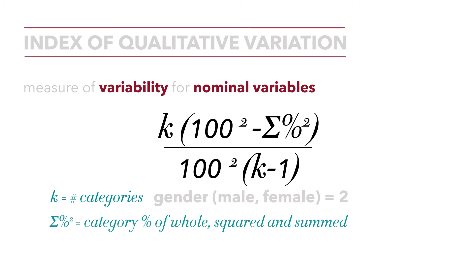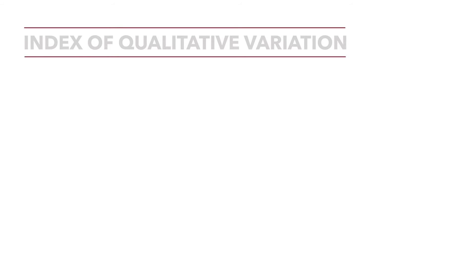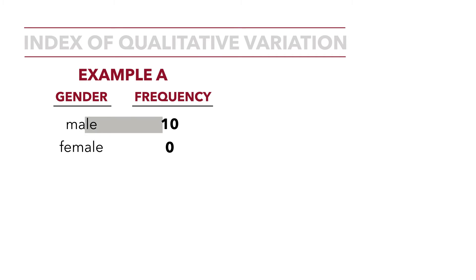Probably the simplest way to understand the index of qualitative variation is to show extreme examples. In example A, we have the variable gender with categories male and female. We can see that the frequency for males is 10 and zero females. You can clearly see that there is absolutely no variability in the variable gender. Every observation is male.